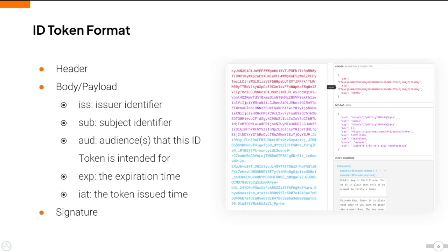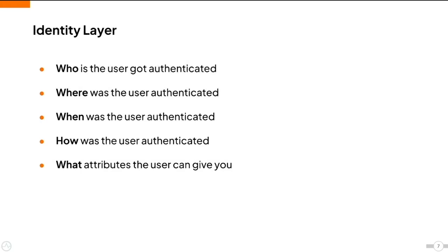The signature is used to preserve the integrity of the JWT. The application should have the public key and information about the authorization server to validate the signature. The ID token, which represents the identity layer, provides user-related information such as who the user is, where and when they were authenticated, the mode of authentication, and the attributes the user agreed to provide.